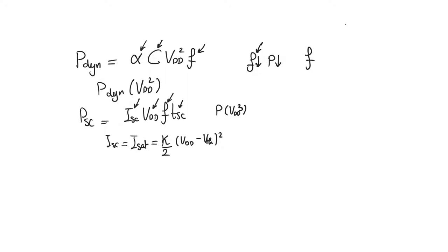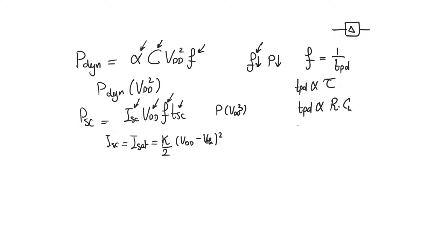There's also a hidden trade-off here that we do not see. If we look at operating frequency for a single gate, this asks how often we can switch the inputs to this gate and still expect to see a correct output at the end of each cycle. So operating frequency is basically the reciprocal of propagation delay through the gate. Propagation delay is proportional to the time constant, which is the product of resistance and capacitance. So propagation delay is proportional to V_DD over 4·I_sat times C_L, where V_DD over 4·I_sat is the expression of equivalent resistance when we switch from high to low or low to high.